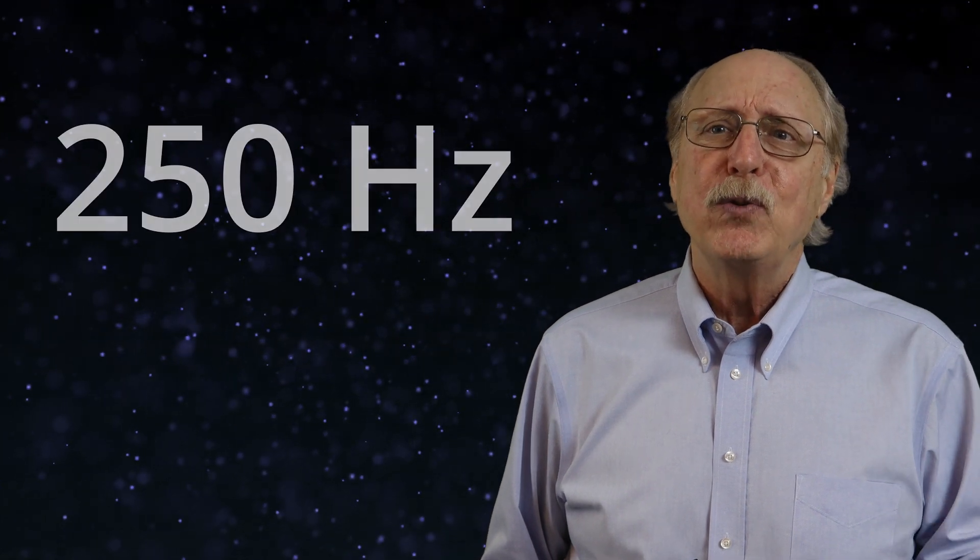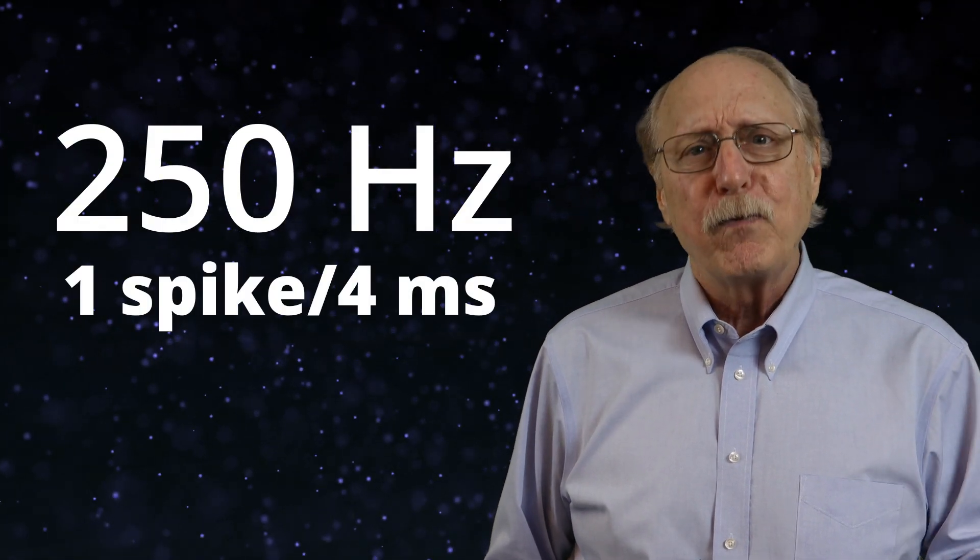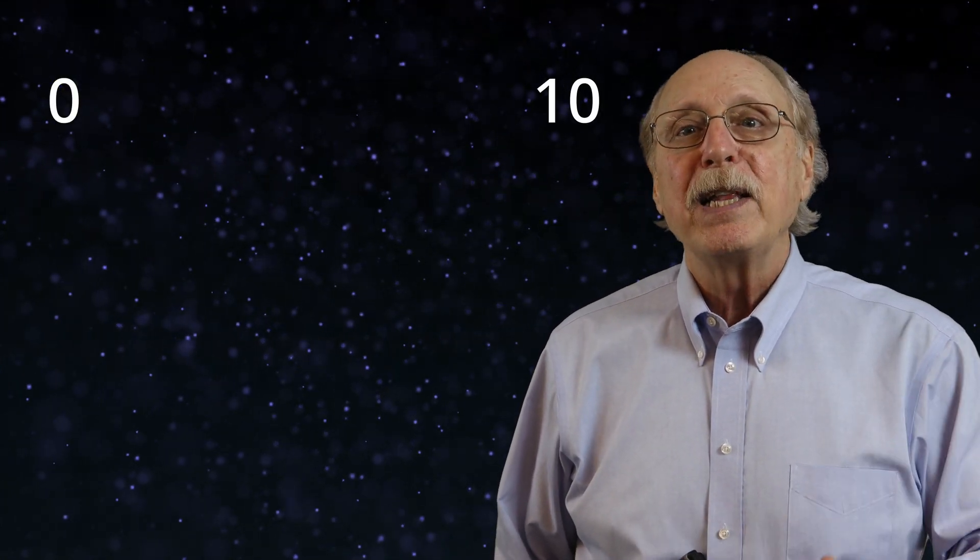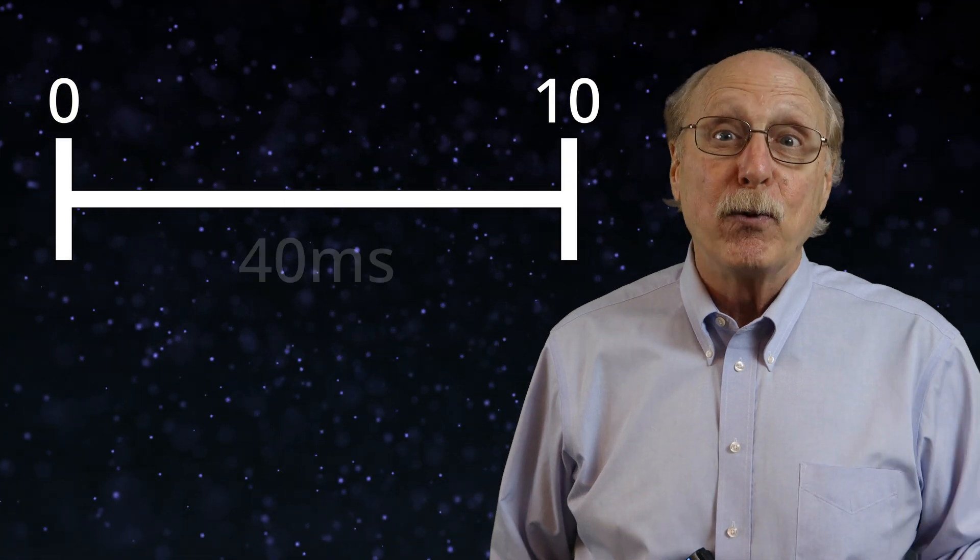In the brain, numeric values could be represented by the number of neural spikes in a given time period. But remember that neurons are really slow, with a maximum frequency of about 250 hertz, or 4 milliseconds per spike. If we want to represent the numbers 0 through 10, we could allocate a time period of 40 milliseconds.